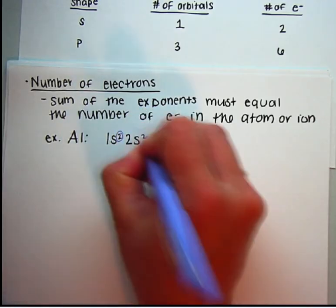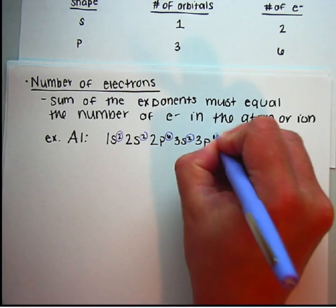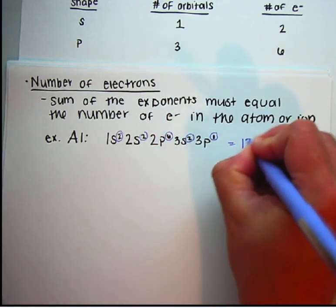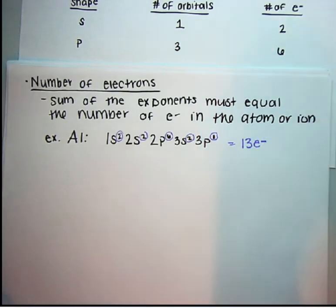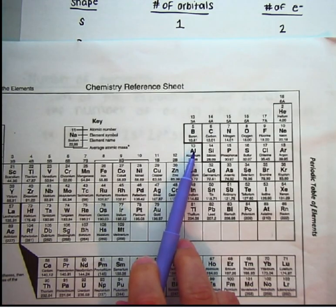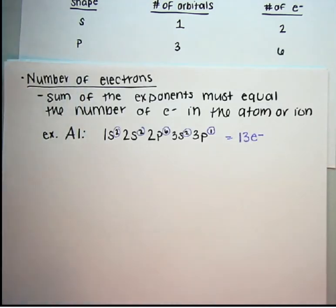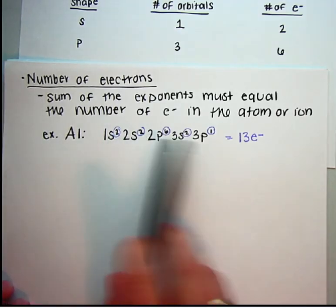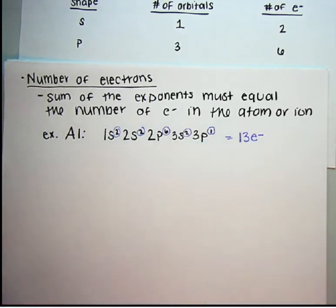For aluminum: 2 + 2 + 6 + 2 + 1 = 13. I have 13 electrons. An aluminum atom, if I look at the periodic table, has an atomic number of 13, so aluminum has 13 protons and also 13 electrons. That's just a quick check — make sure when you add up all of your exponents or superscripts, it equals the number of electrons in that atom or ion.